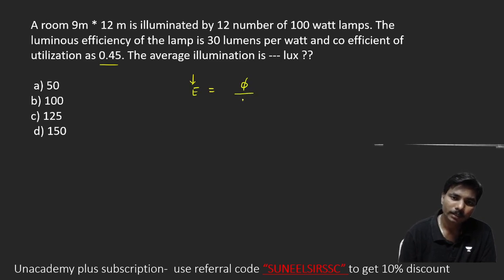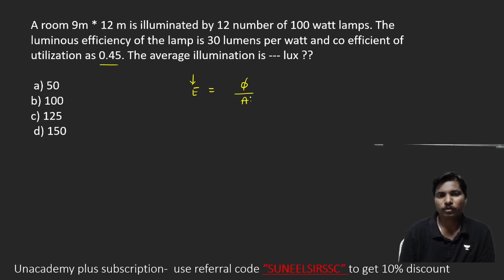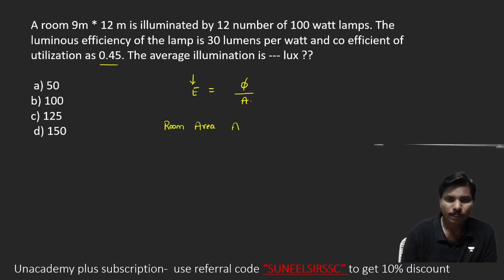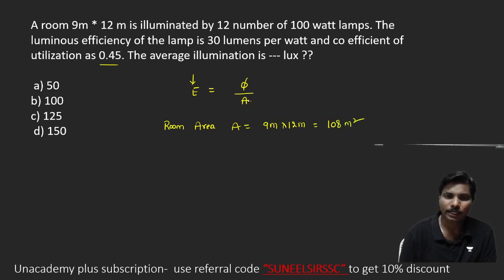Illumination formula is total flux reaching the working plane divided by unit area. We need to find the total lumens. First, the room area A = 9 meters × 12 meters = 108 square meters. Now we need to find out the flux.